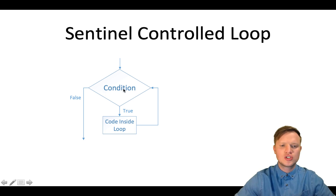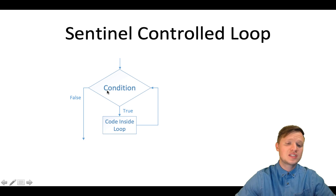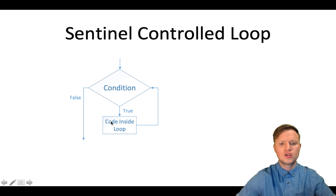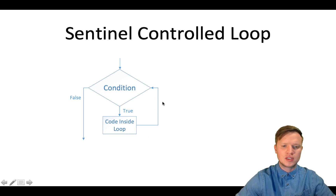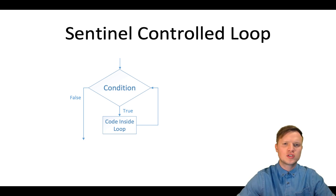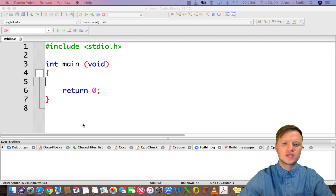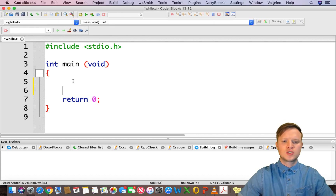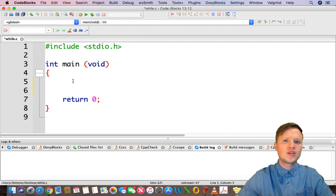Looking at our flow diagram, there's going to be a condition. If this condition is true concerning the sentinel value, the code inside will be executed and this will be repeated until the condition is false. The sentinel value controls the condition outcome — either true or false. Let's go to Code Blocks and see how we implement this in a real-world environment.